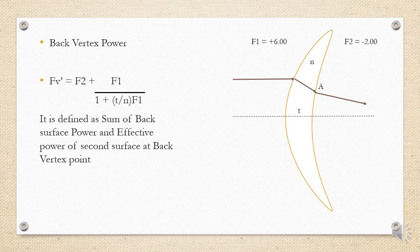Back vertex power is the effective power at the back vertex point. At that point, the back surface is incident, so it is the sum of the back surface power plus the effective power of the front surface at the back vertex point. The formula is: FV' = F2 + F1 / (1 + (T/n) × F1), where F2 is the back surface power, F1 is the front surface power, T is central thickness, and n is the refractive index.